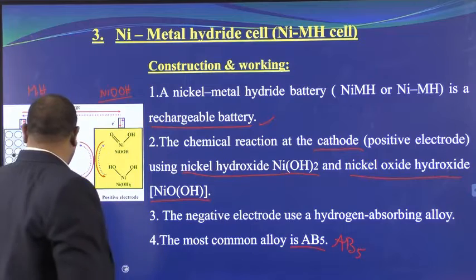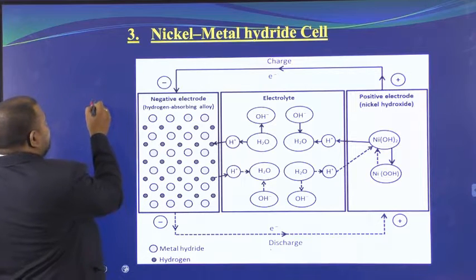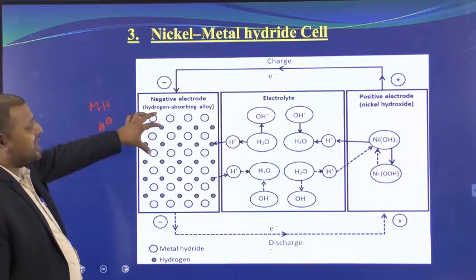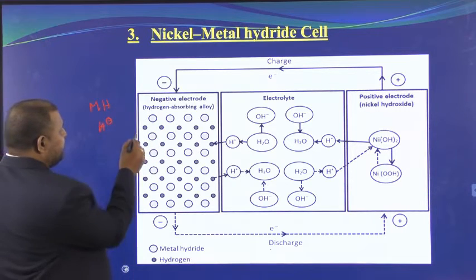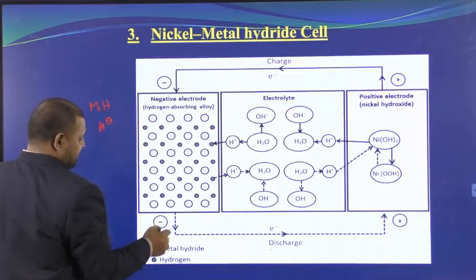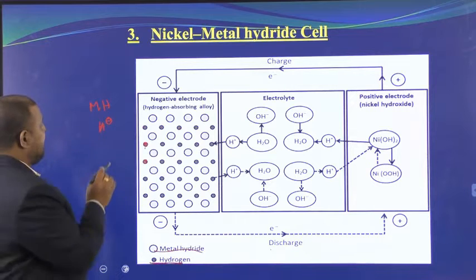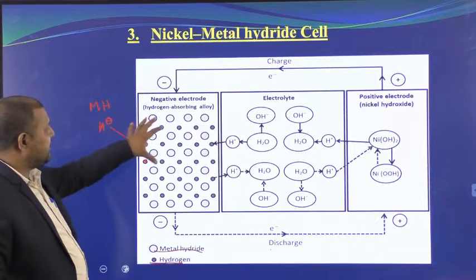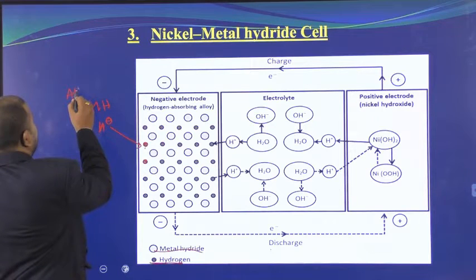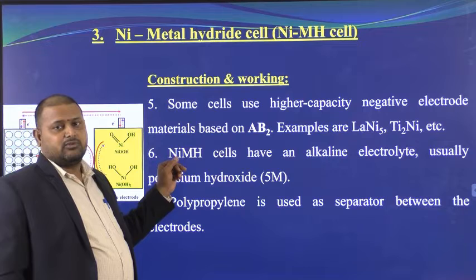The negative electrode uses a hydrogen-absorbing alloy of the AB₅ type. In the diagram, you can see the metal hydride structure: small circles represent hydride ions (H⁻) trapped within the gaps of the metal hydride lattice. The MH electrode always gives H⁻ ions. This negative electrode must have the capacity to absorb these H⁻ ions.